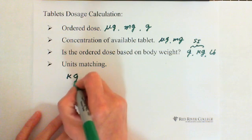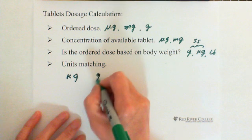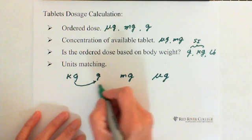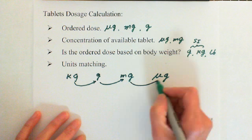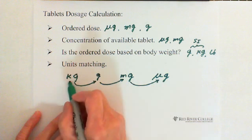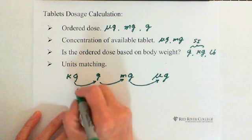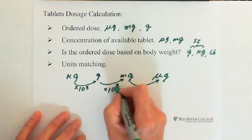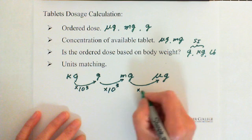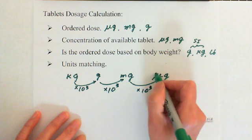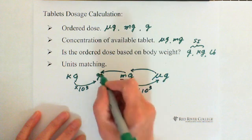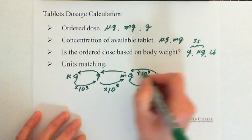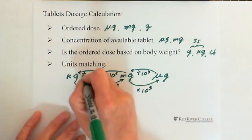Here I'll briefly talk about unit conversion. From kilogram to grams to milligrams to micrograms — this is big unit to small unit. In SI units, kilogram to gram: multiply by one thousand. From gram to milligram to micrograms: multiply by one thousand. And from small unit to big unit, you divide by one thousand each step.